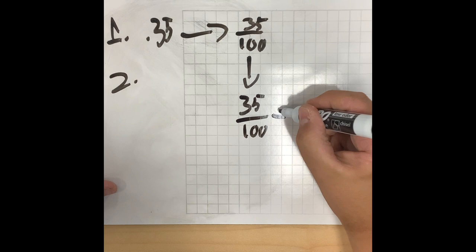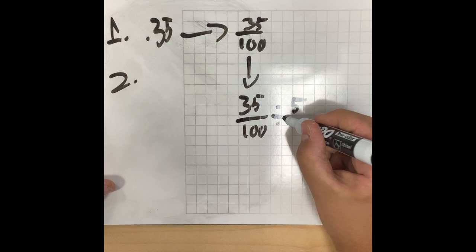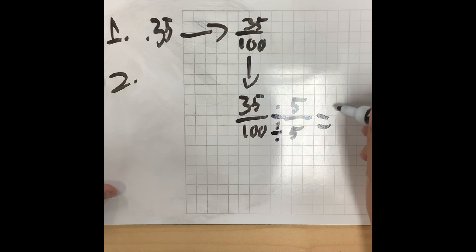Then once you bring that down, divide the 35 and 100 by 5. Then once you divide them by 5, you'll get 7 over 20.